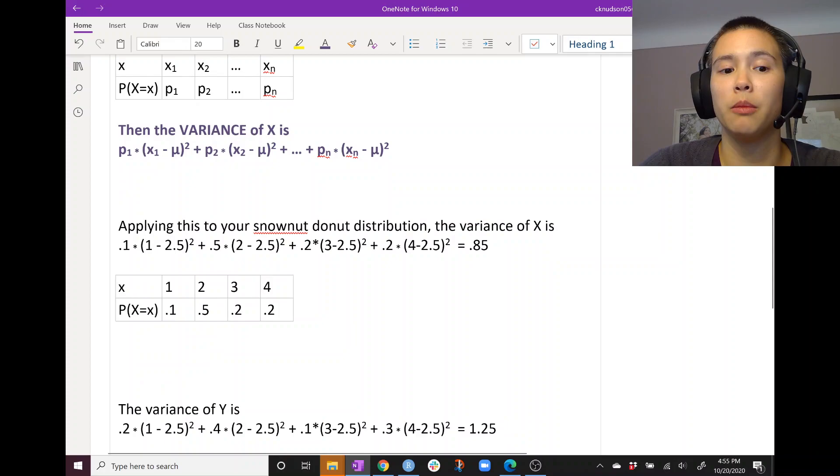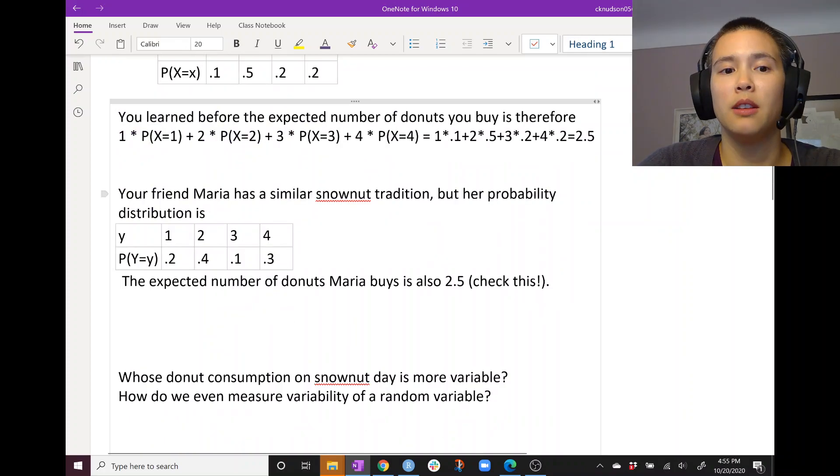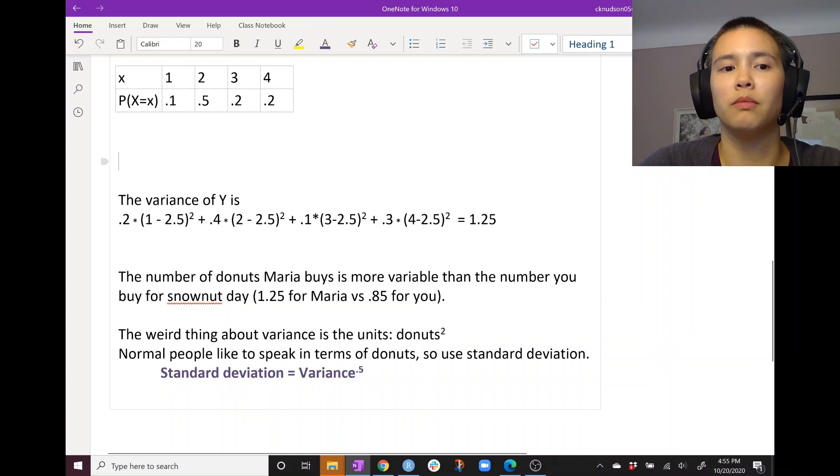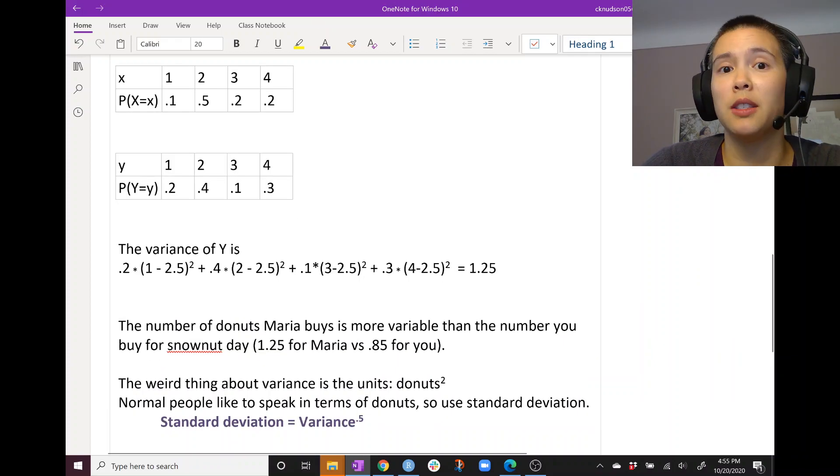Now let's do the same thing for Maria's donuts. So here is her probability distribution. We'll have a similar setup. Her mean is still 2.5, so we can have μ equals 2.5 for each one of these. And the values that Y takes on is still 1, 2, 3, 4. So we have 1, 2, 3, and 4. All that we're changing now is the probabilities. So she buys one donut with probability 0.2, she buys two donuts with probability 0.4. And when we go ahead and crunch that, we get 1.25 as the variance.